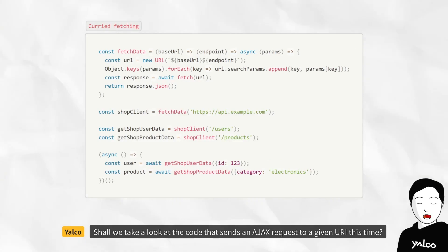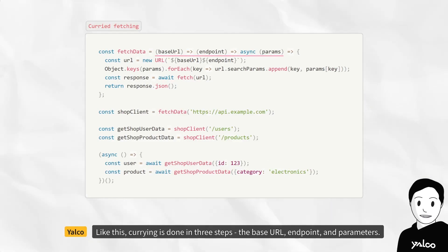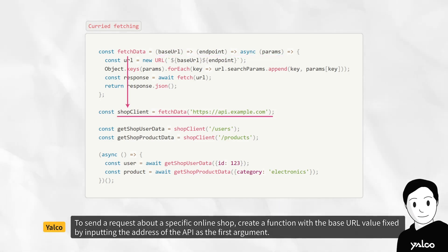Shall we take a look at the code that sends an AJAX request to a given URI this time? Like this, currying is done in three steps. The base URL, endpoint, and parameters. To send a request about a specific online shop, create a function with the base URL value fixed by inputting the address of the API as the first argument.